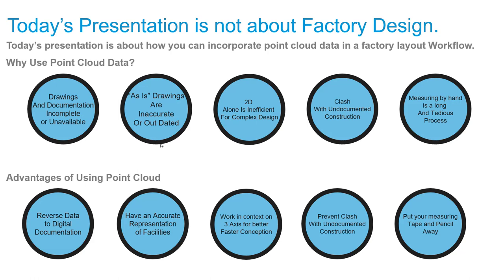Why use point cloud? Most of the time when working, we'll have very minimal information — mostly 2D drawings in DWG or PDF format — and the documentation will be inaccurate, old, or even nonexistent. Working in 2D brings challenges: for example, if I have an angle in a pipe run, I need two views to assess it and interpret a lot of information. Working in 3D solves that quite easily. The advantages of point cloud: we can reverse engineer it to tangible documentation, have an accurate representation of the as-is state, work in context, make better and faster decisions, prevent clash, and put our measuring tape and pencils away.